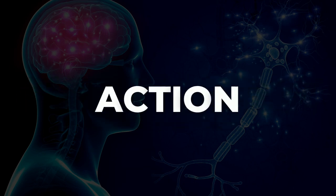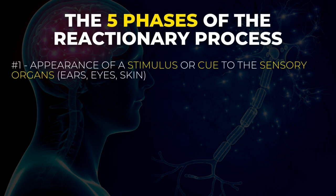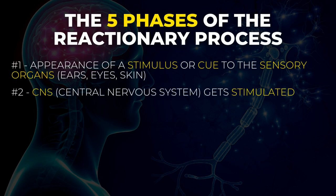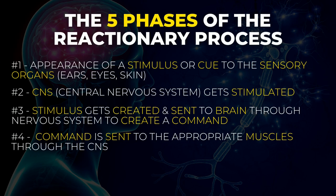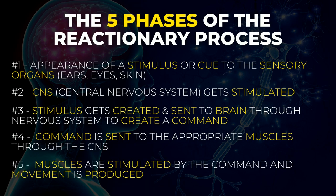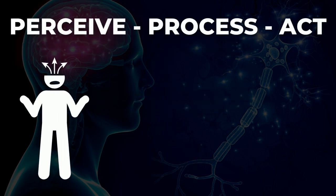That's why you have to look at it holistically and understand that cognition without action is nothing. According to Vladimir Zatsiorsky, there are five phases during the reactionary process. Phase one consists of the appearance of a stimulus or cue to the sensory organs. Then the central nervous system gets stimulated. As a result, a stimulus gets created which is sent to your brain through your nervous system to create a command. This command is then sent to the appropriate muscles through the CNS. The muscles are finally stimulated by the command and movement is produced. In simpler terms, this process can be broken down into three actual phases: the perception phase, the processing phase, and the action phase. All of these processes happen within split seconds during sports.